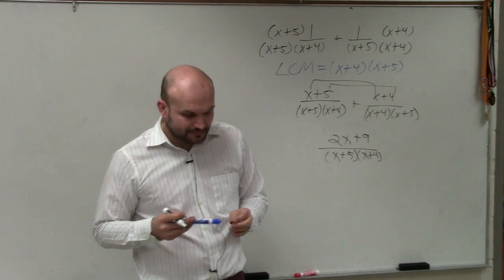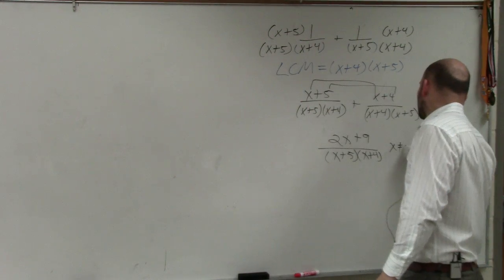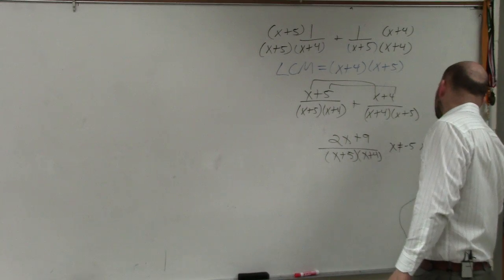And again, I would recommend, Q, before you multiply this, is to write the constraints. x cannot equal negative 5, and x cannot equal negative 4.